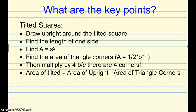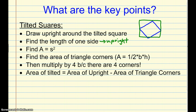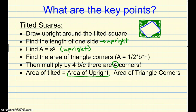The tilted squares are a little bit more involved. So what are the key points? First, if we have a tilted square, we draw an upright square around that tilted square. Then we find the length of one side of the upright square and find its area. Then we find the area of the triangle corners using one-half times base times height. Once you find the area of one corner, multiply by four because there are four corners. Then subtract: like our example, 49 minus 20 equals 29.